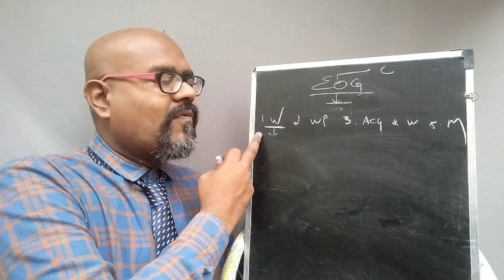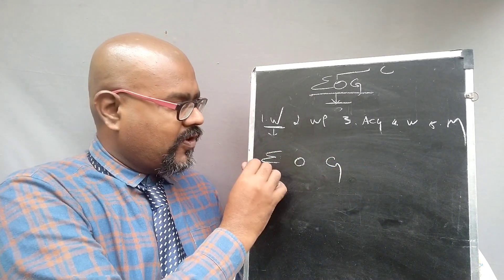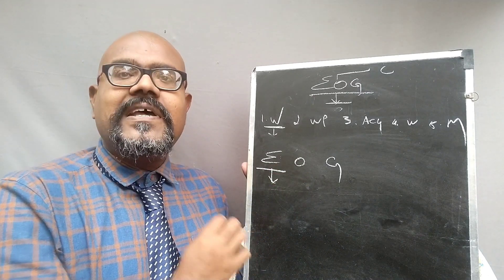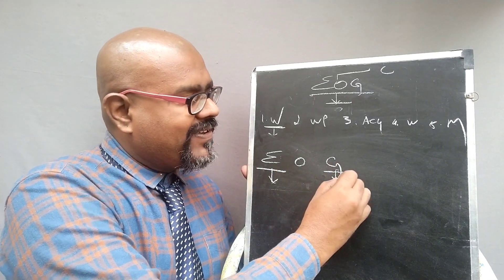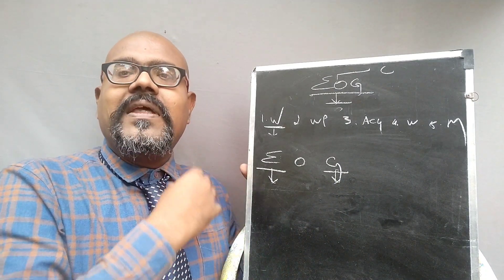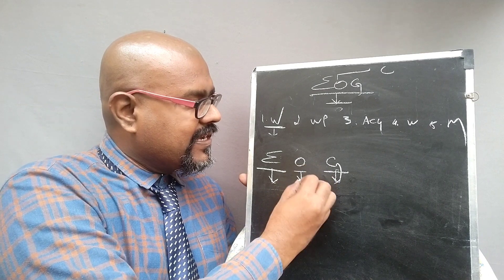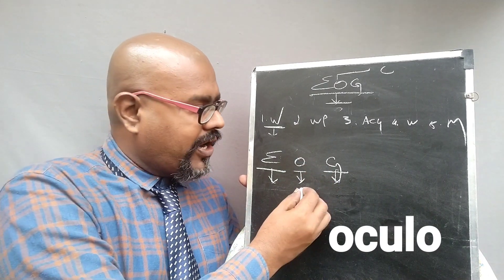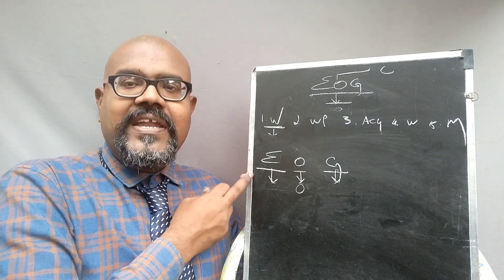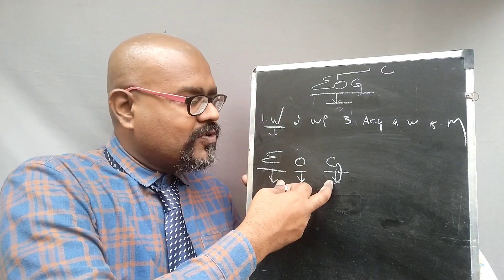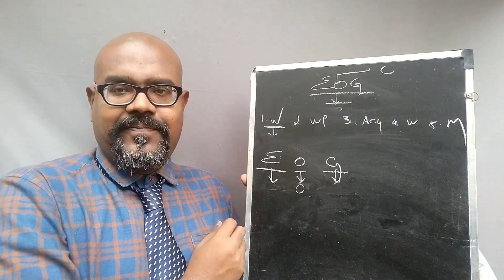The first question — what is EOG? You know that 'E' represents electrical activity, that is called as Electro. And 'graphy' is a measuring technique. 'Oculo' represents your human eye. So EOG is the electrical activity of the human eye measured by some measuring technique. That is called as Electro-Oculography.